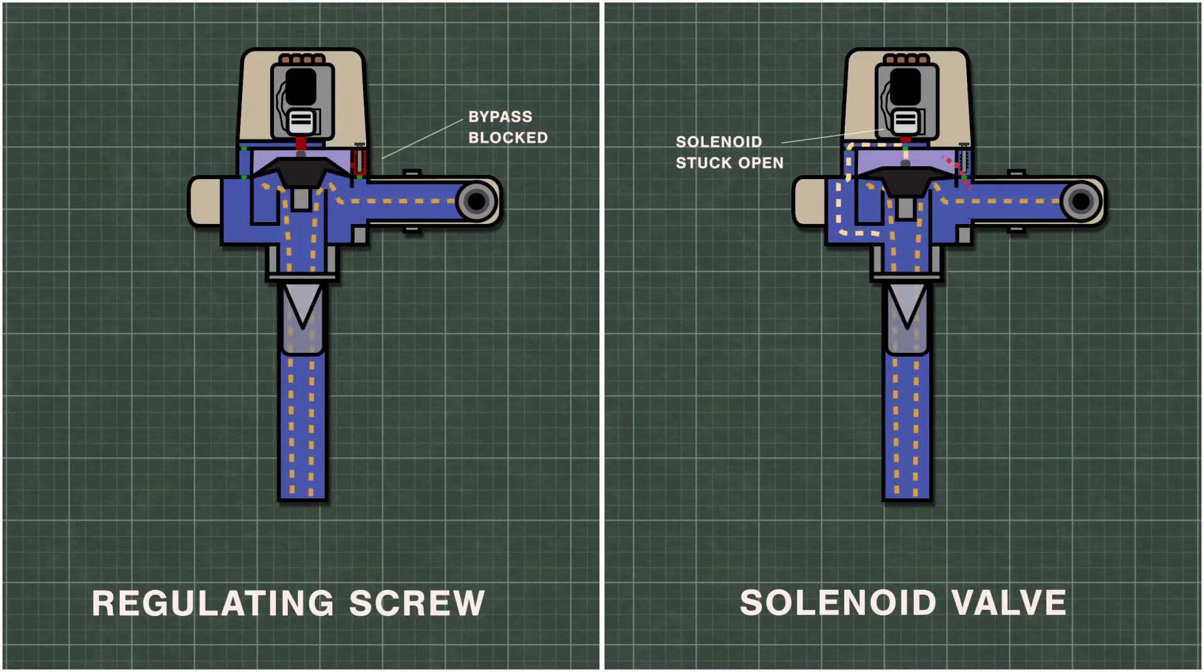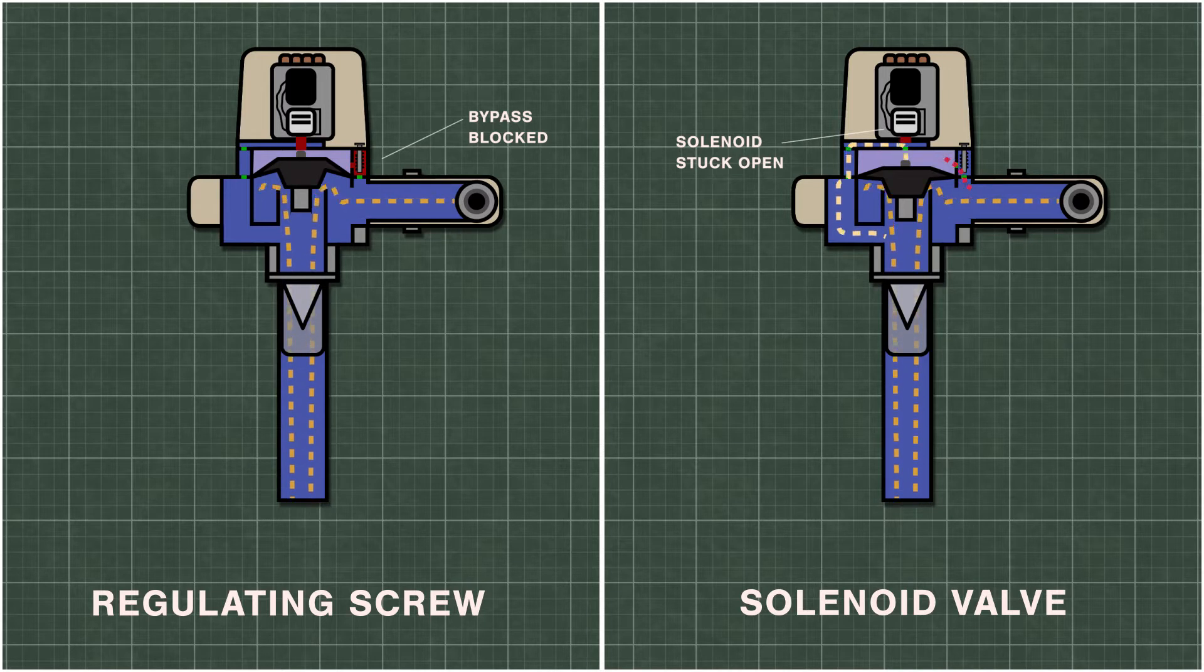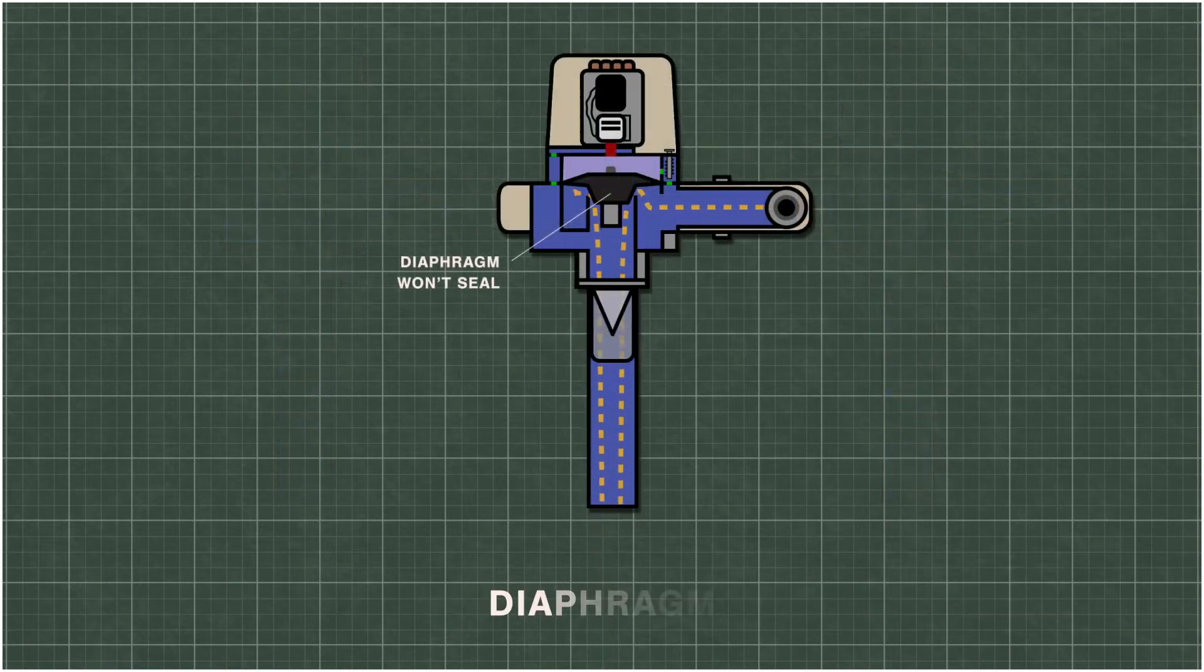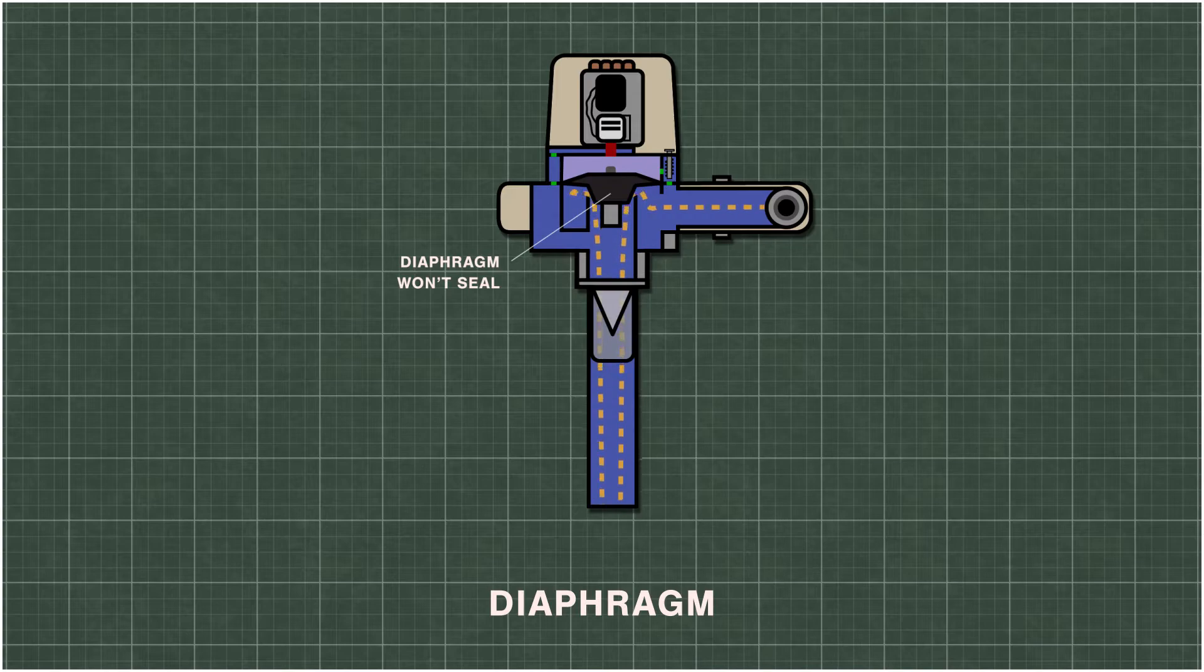Continuous flushing can happen when the upper chamber does not fill with water. Either the bypass isn't letting in enough water or the solenoid isn't closing. Another cause can be the diaphragm. If it's stuck open, then the water will continue to flow during a flush.